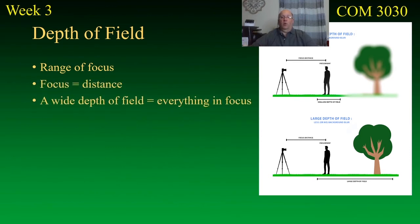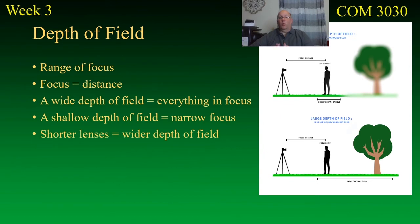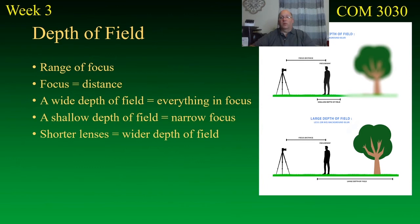Focus equals distance. A wide depth of field means everything is in focus; a shallow depth of field makes it more narrow. A wider, short lens — a wide angle lens — is going to influence your depth of field. A wider lens opening, because it elongates distance, will give you a greater depth of field — more things are going to be in focus. So if you want a lot of things in focus in your shot, you might be better off with a wide angle lens than a telephoto.